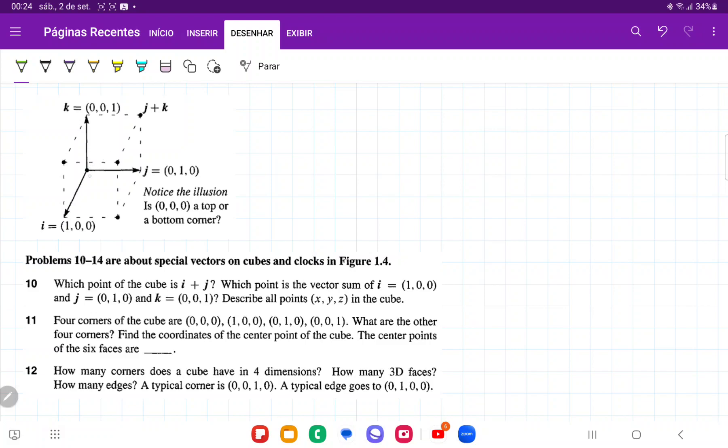So we just have to think of the fact that the i vector gives it maybe a forward dimension, the j vector gives it a sideways dimension, and then the k vector gives it an upwards dimension.